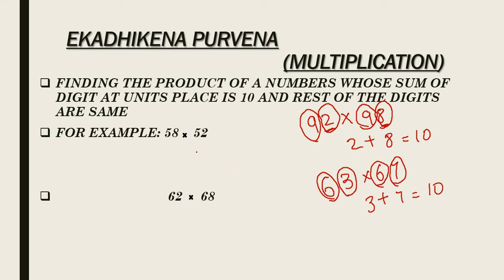Now let us learn to apply this trick completely. As you see the numbers are 58 and 52. When we add up the numbers at the units place we get 10, and the numbers at the tens place are same, that is 5. So we can apply this sutra here.